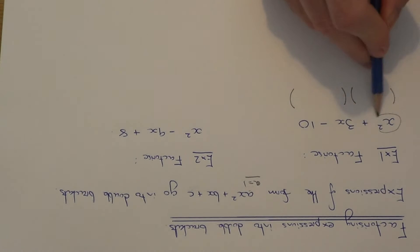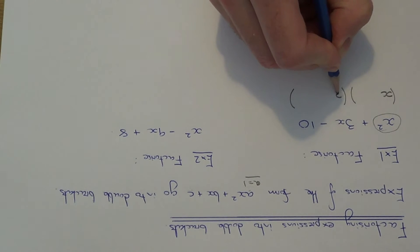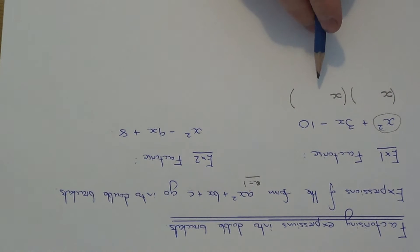Now since we have X squared here, the first terms must multiply to give us X squared. So you can put an X here and an X here. All we need to do next is work out what we put inside the bracket for the numbers.